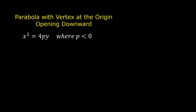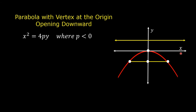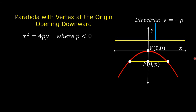The equation of a parabola with the vertex at the origin and opening downward is in the form x squared is equal to 4py, where p is less than zero. In this figure, this is the vertex of the parabola — it's the origin, with coordinates (0, 0). This is the focus of the parabola, with coordinates (0, p). This yellow line is the directrix, with equation y equal to negative p. This yellow segment is the latus rectum of the parabola.